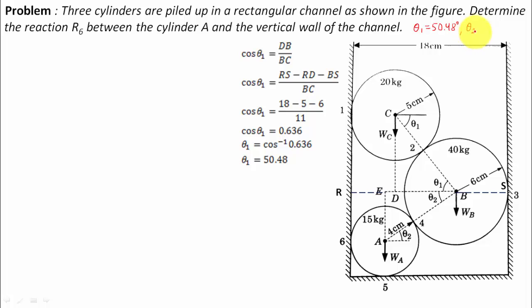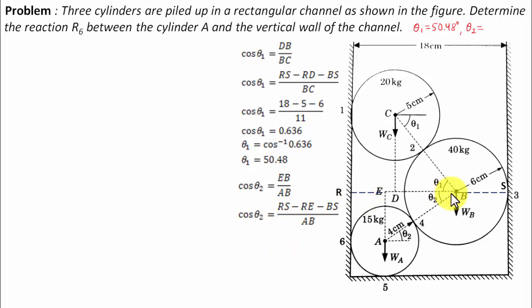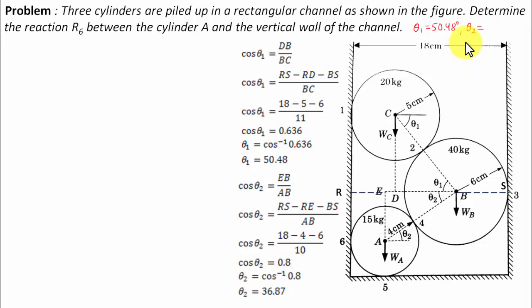Now we determine theta2. Looking at triangle BAE, cos(theta2) = BE / AB. AB equals 4 + 6 = 10. EB equals RS minus RE minus BS, where RS = 18, RE = 4, and BS = 6. Putting in all values, theta2 works out as 36.87 degrees.